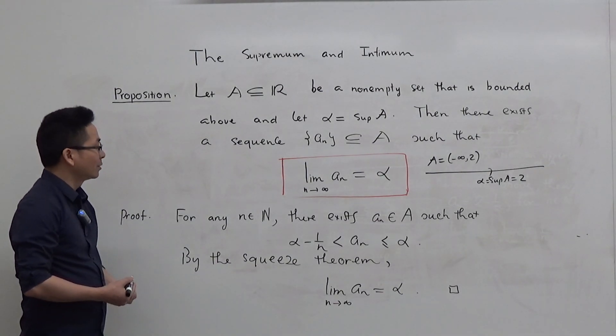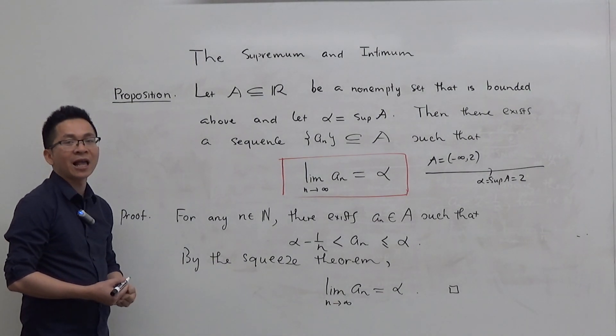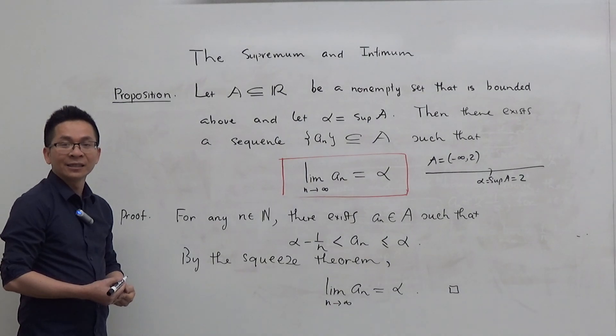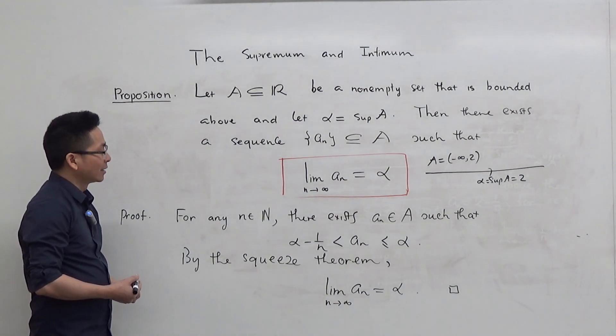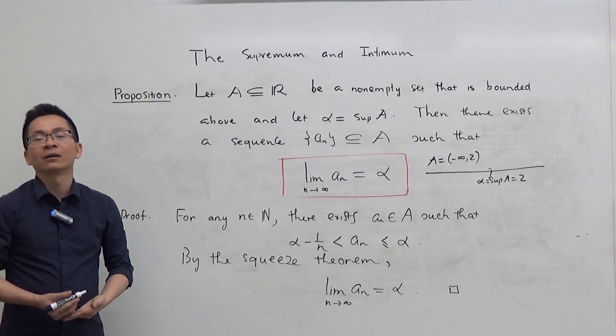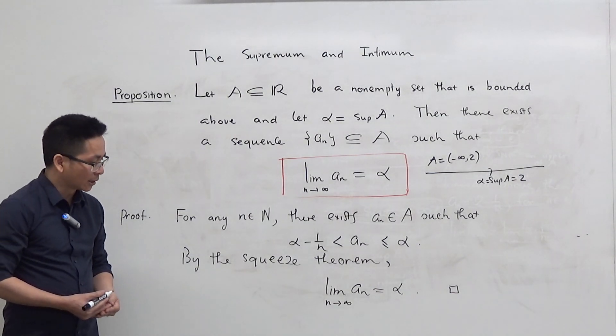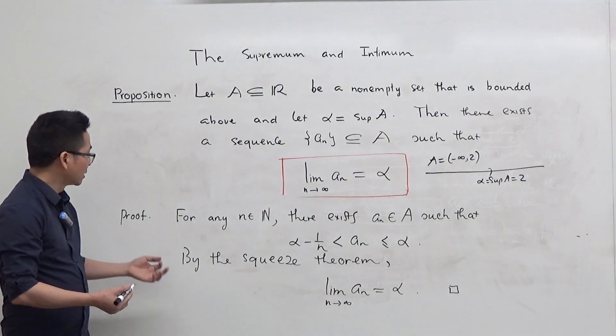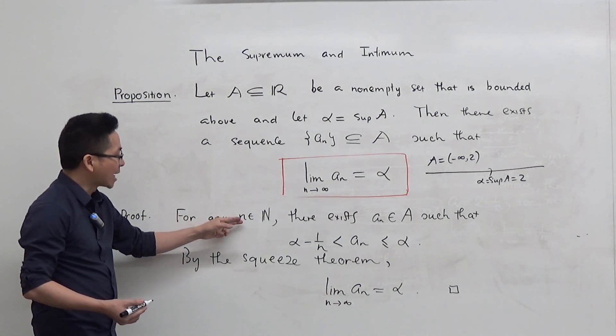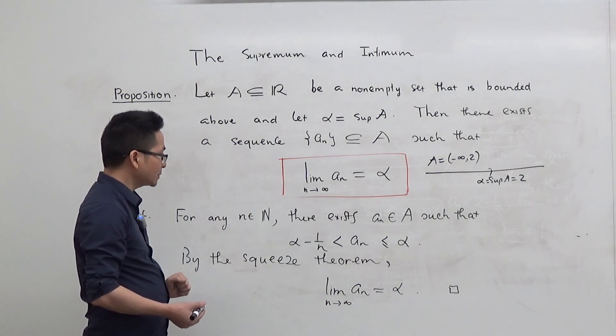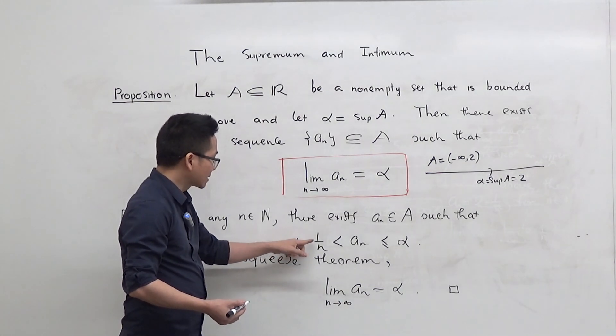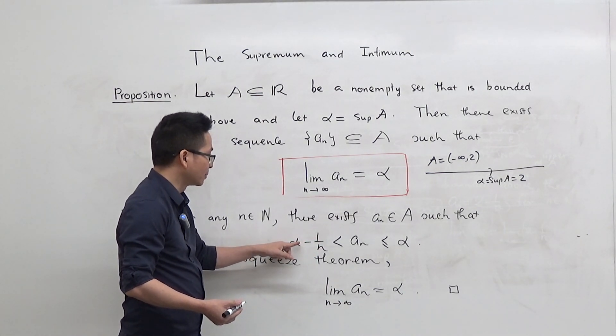So let me go through the proof of this proposition. And the proof is very simple based on the so-called epsilon characterization of the supremum that we mentioned earlier. So now if you take any natural number n and you subtract 1 over n from alpha,